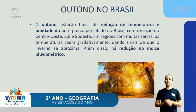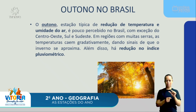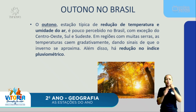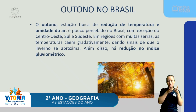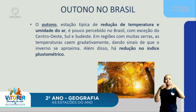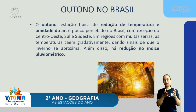O outono é uma estação típica de redução de temperatura e umidade do ar, e é pouco percebido aqui no Brasil. Aqui na região nordeste e norte, você quase não vê outono. Mas lá para o sul do país, você consegue perceber algumas características da estação do outono. Em regiões com muitas serras, as temperaturas caem gradativamente, dando sinais de que o inverno se aproxima — é como se o outono anunciasse o inverno. Além disso, há redução do índice de chuva.